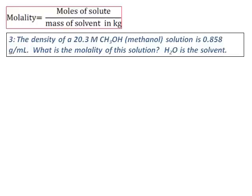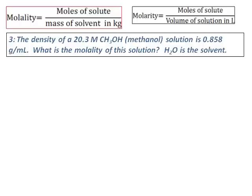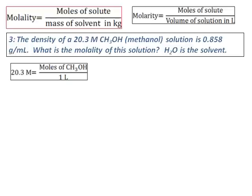Let's define molarity first. Molarity is moles of solute divided by volume of solution in liters. To calculate molality, I need the moles of solute. From the value of molarity, I can get the moles of methanol. Molarity is 20.3 M, which equals moles of methanol divided by 1 liter, giving moles of CH₃OH as 20.3.